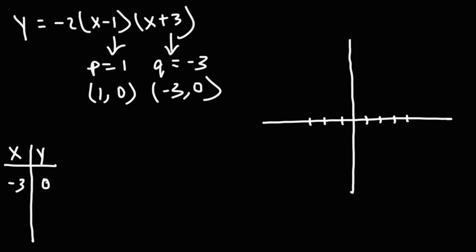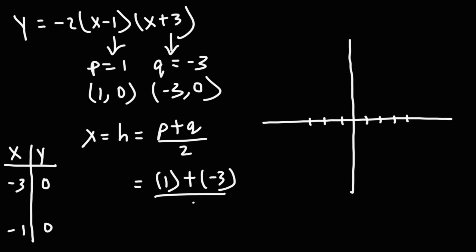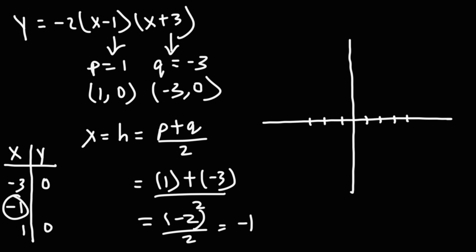We have negative 3 comma 0 and 1 comma 0. Now let's find the x-coordinate of the vertex, which equals h — the average of p and q. p is 1 and q is negative 3. If we add 1 and negative 3, we get negative 2, and negative 2 divided by 2 is negative 1. So negative 1 is the midpoint of negative 3 and 1, meaning the x-coordinate of the vertex is the midpoint of the two x-intercepts.